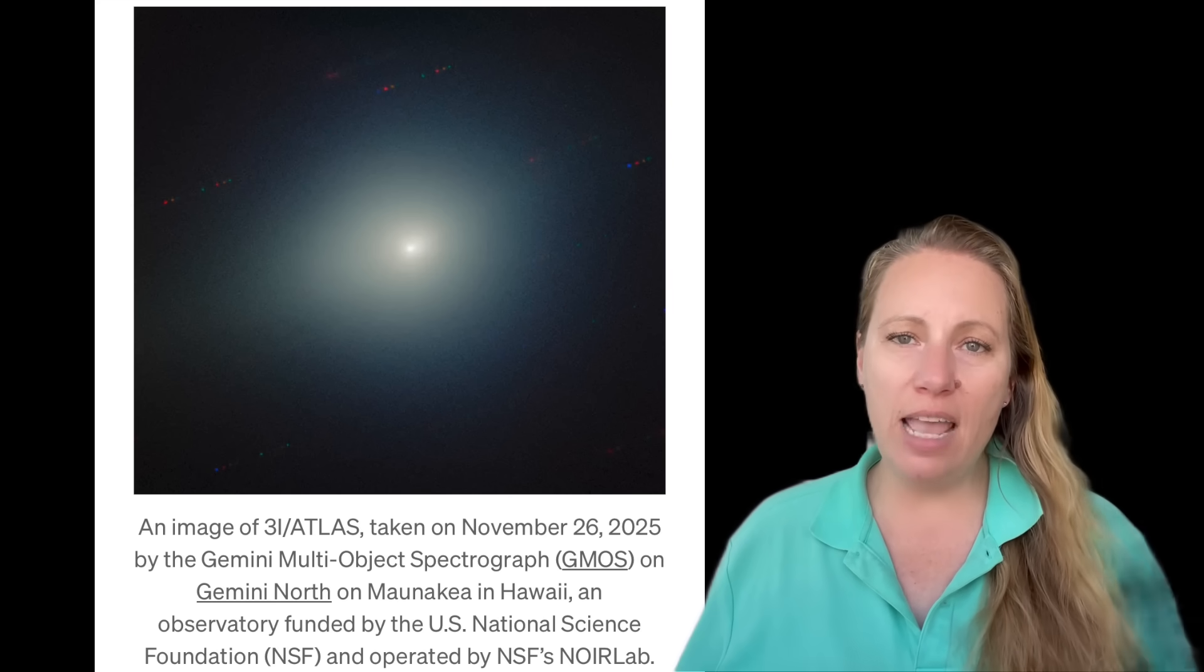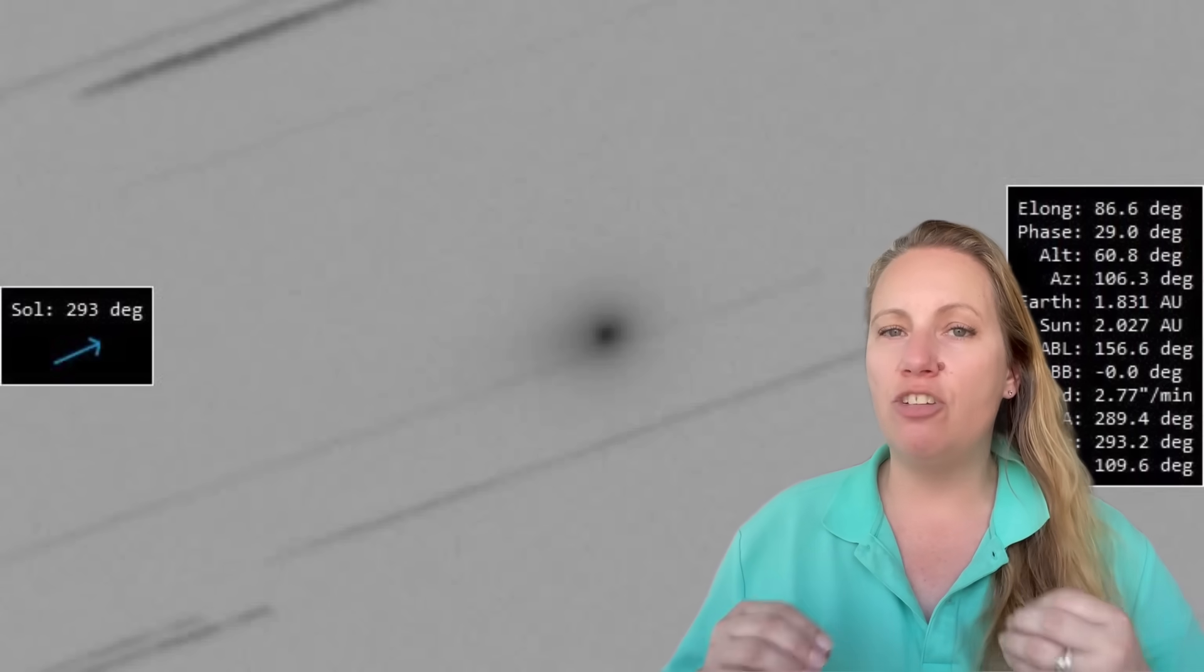So we know, normally a comet tail points away from the Sun. That's because sunlight and the solar wind is pushing the dust and the gas outwards. An anti-tail is different. It appears to point towards the Sun. That sounds impossible, but it is a well-known optical effect. And it happens when a comet releases dust. The dust spreads into a flat sheet and the Earth happens to look at that sheet edge on.